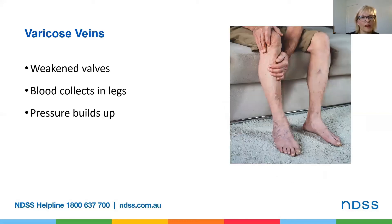Lastly, varicose veins. These occur due to weakened valves in the legs. Veins get large, twisted and weak, and when this happens they don't work as they should and pressure occurs from blood collecting in your legs. You can help prevent varicose veins by maintaining a healthy, comfortable weight. Avoid sitting for long periods and make sure you move every hour. Get regular exercise. You can wear support or compression stockings but you must check with your doctor first. Try to avoid alcohol as it dilates the veins, and when sitting down, try to keep your legs uncrossed.